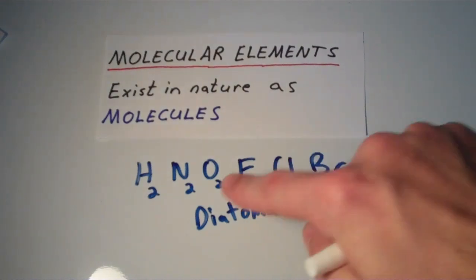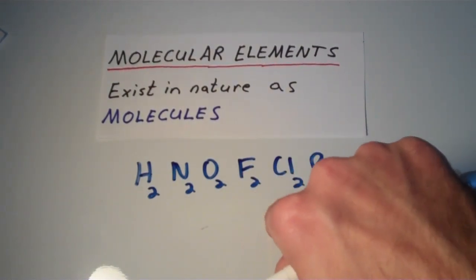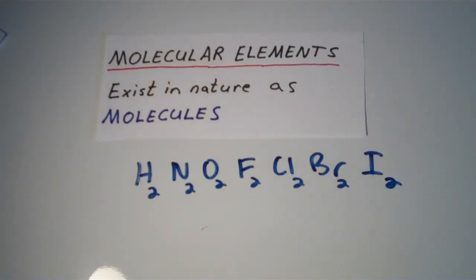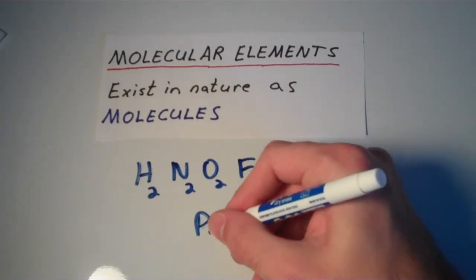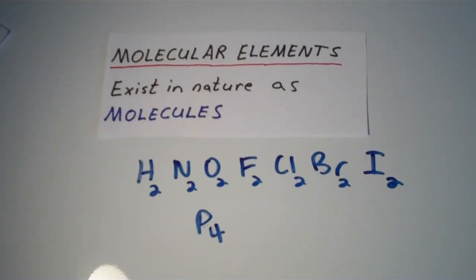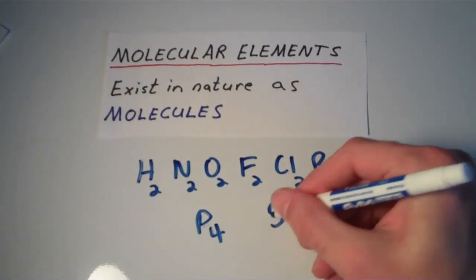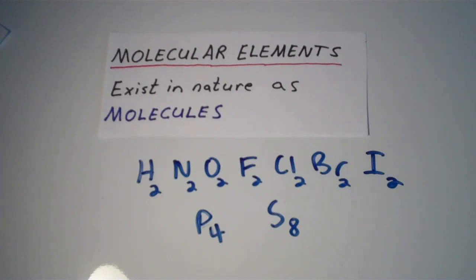There are some elements that are actually what we call polyatomic, meaning that they have more than two atoms covalently bonded together in nature. Like phosphorus, for instance, exists in nature as P4. Four phosphorus atoms bonded together. Sulfur exists as a ring of eight sulfur atoms covalently bonded together. So these are all examples of molecular elements.